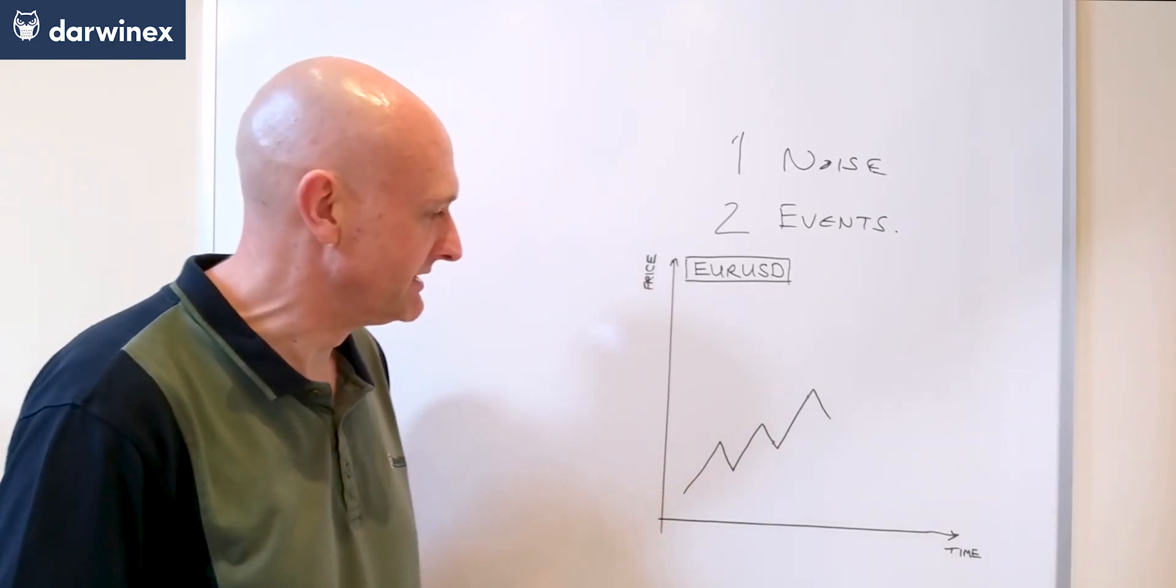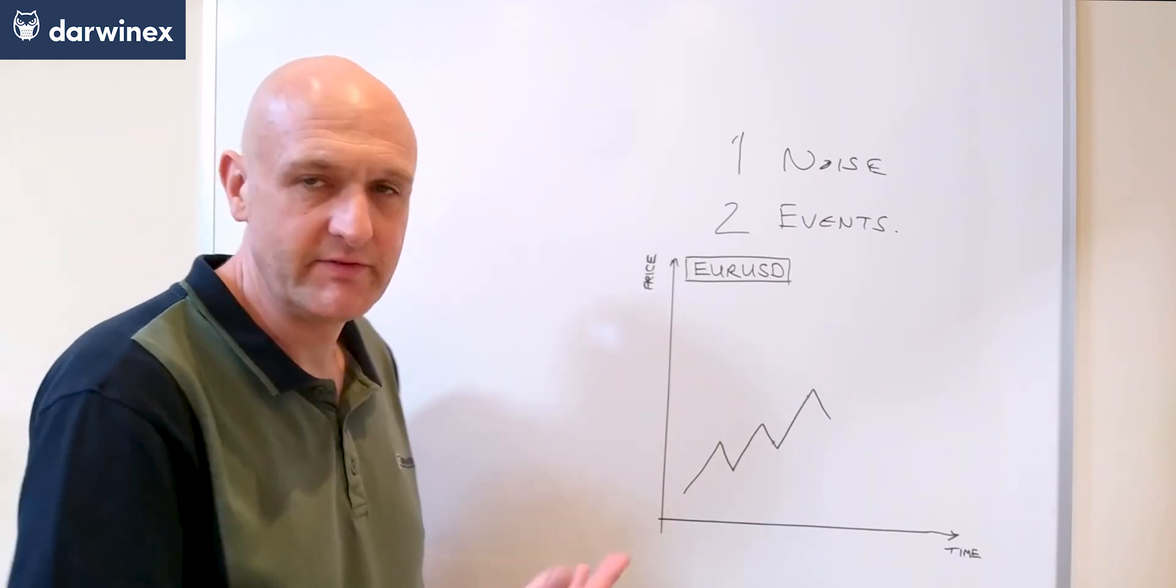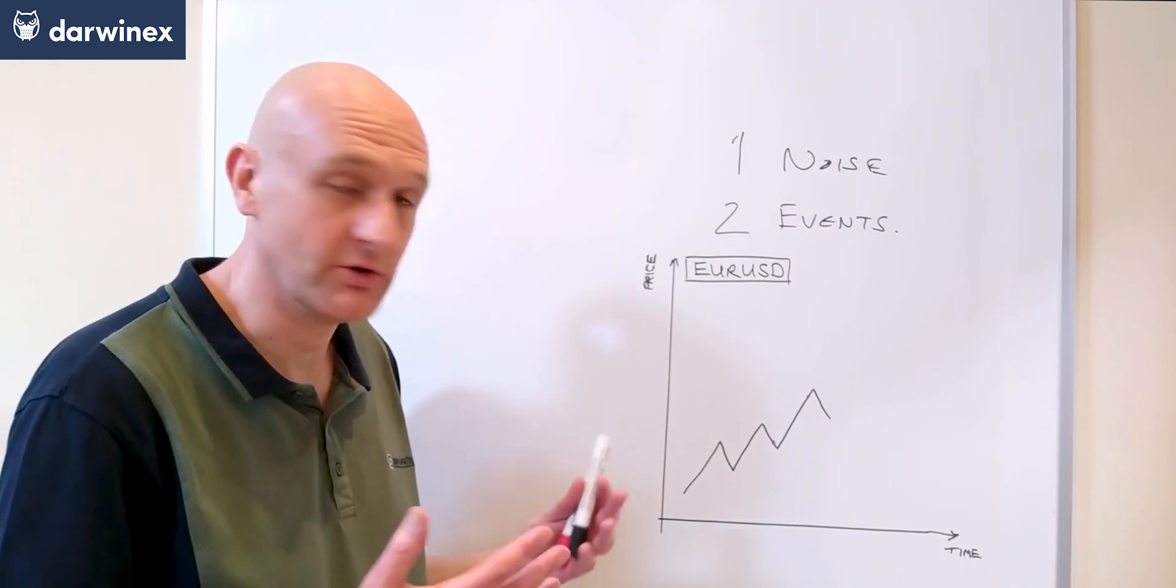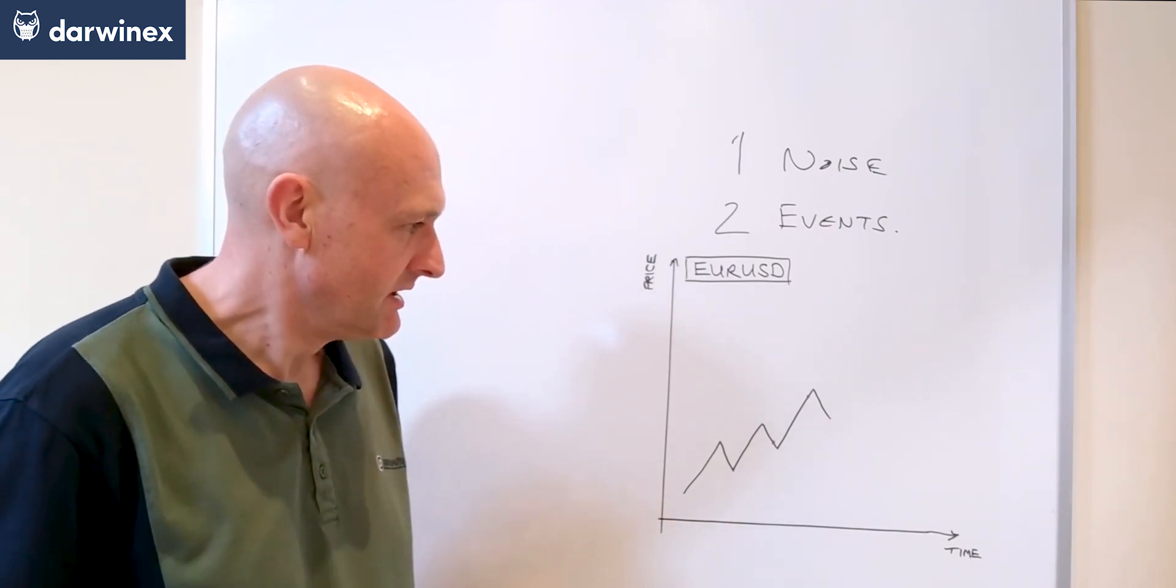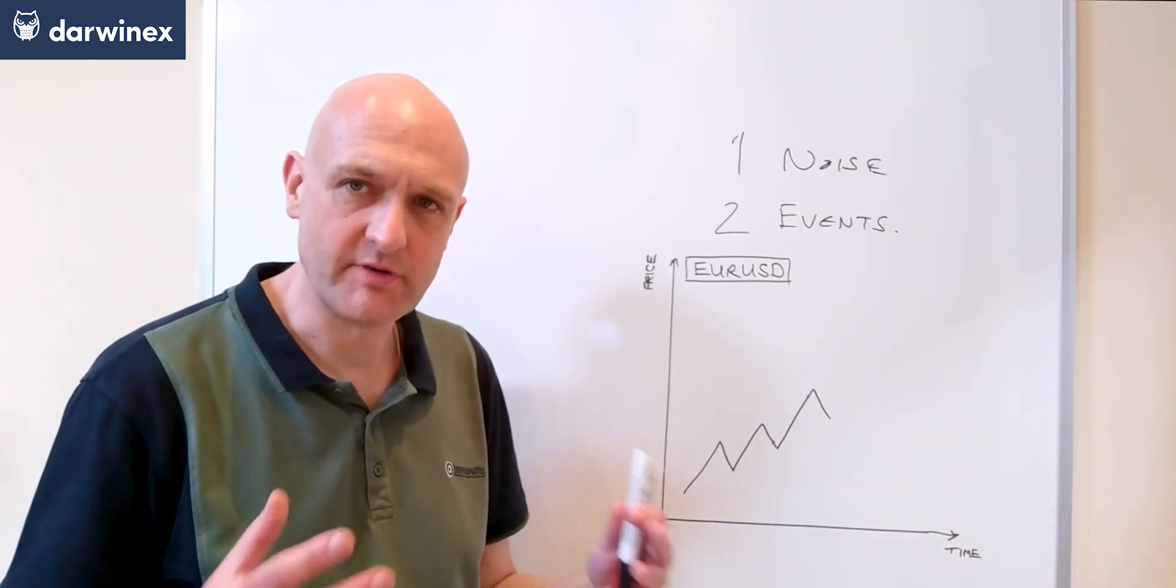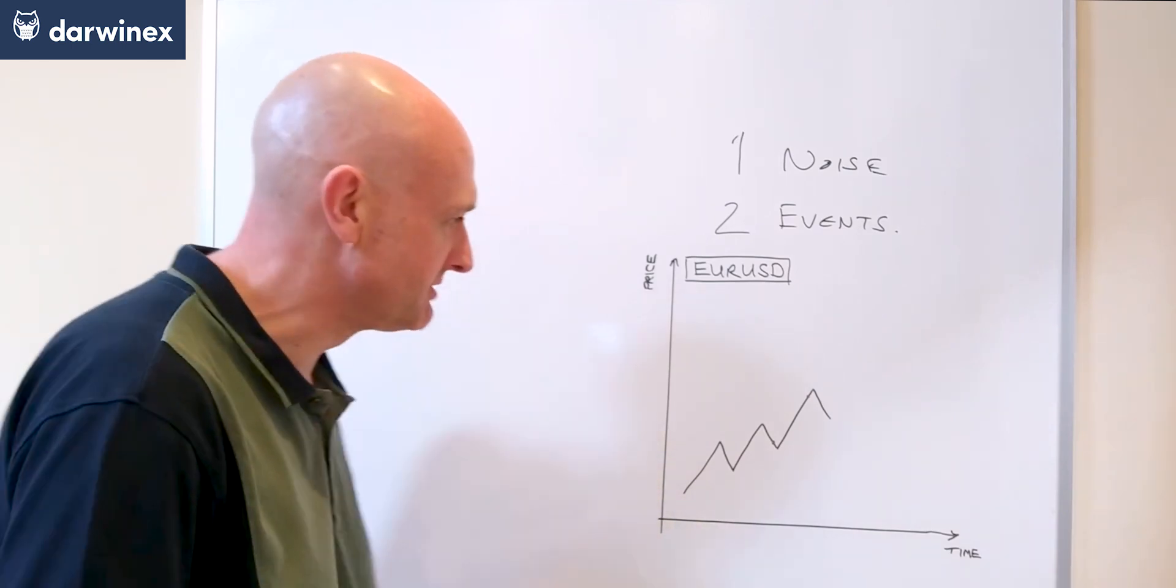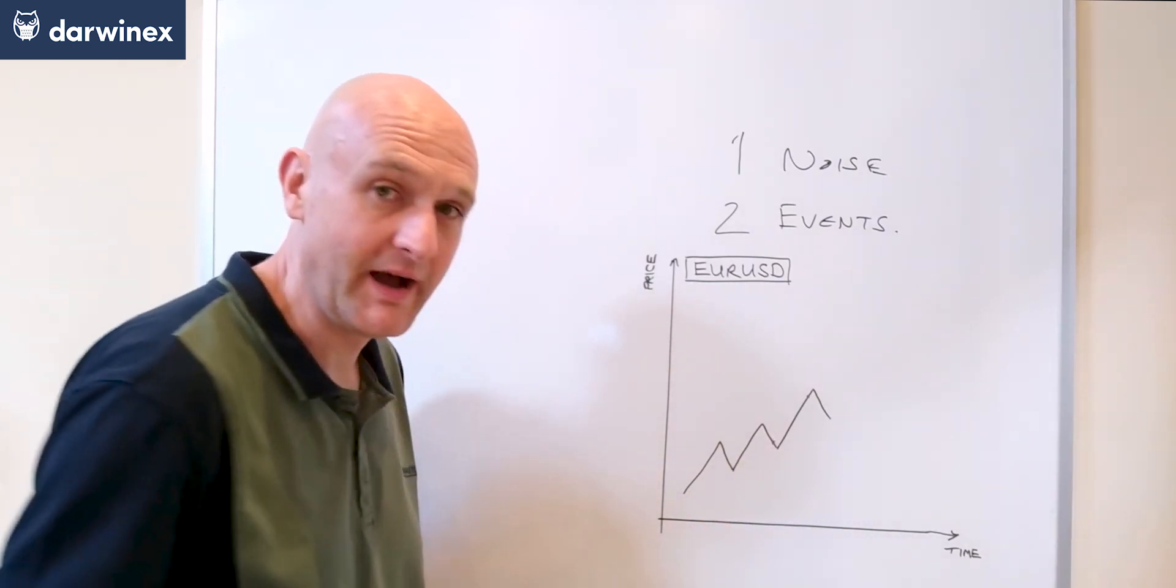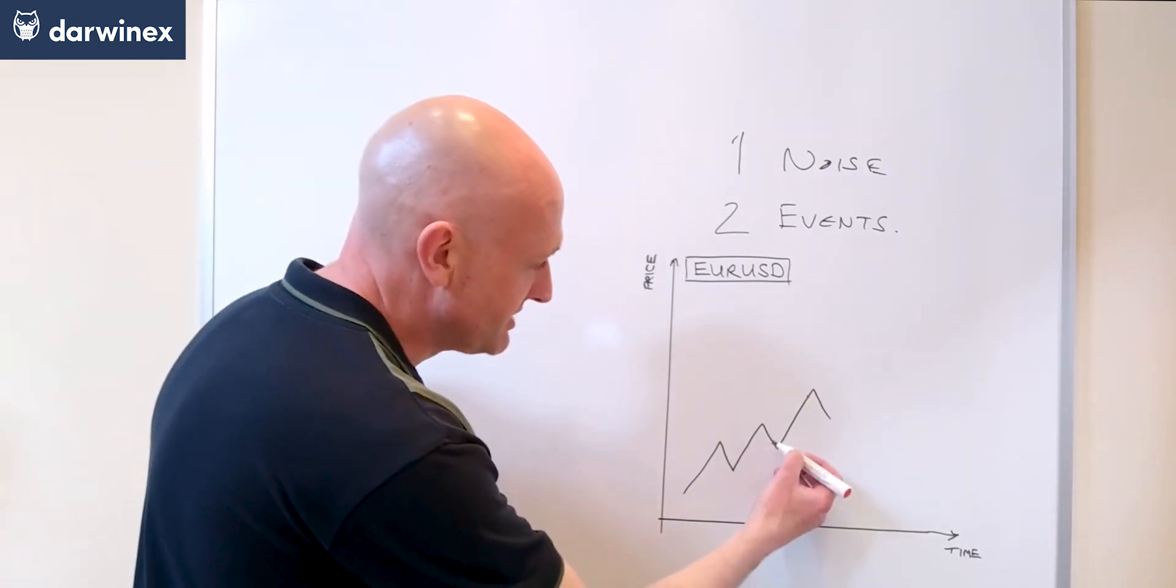So let's use a scenario to illustrate this. Here we've got a simple price chart. Let's just say that this is the euro dollar. And one of our parameter sets in the optimization takes a trade on the pullback of price just here